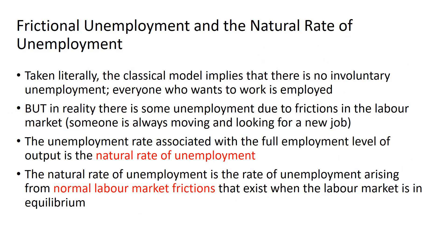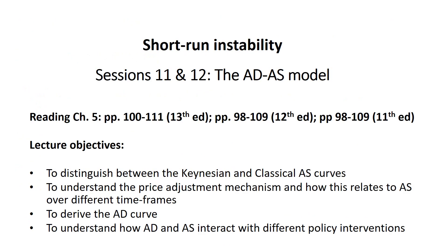Where we had finished off, we were in the process of distinguishing between the Keynesian and the classical aggregate supply curves, which can be thought of as representing different time frames in an economy. The Keynesian aggregate supply curve represents a situation with lots of unemployment — a short-run situation — while the classical aggregate supply curve reflects full employment output, a more long-run scenario.